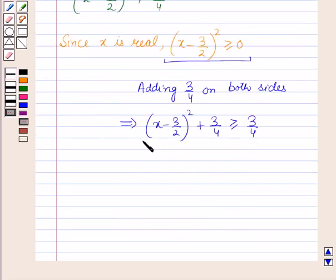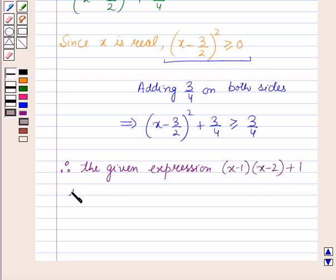As the given expression is greater than or equal to 3/4, which is always positive, therefore we can say the given expression, that is (x-1)(x-2)+1, is always positive.